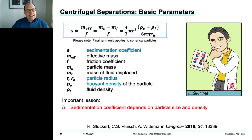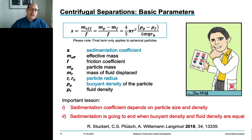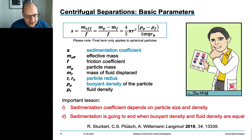The value in brackets becomes zero if you create a density environment for the sedimenting particle where the density of the fluid layer exactly matches the particle density. At this point, sedimentation comes to a full stop, and we can make use of this by banding particles according to their buoyant density.